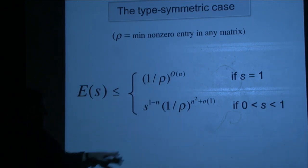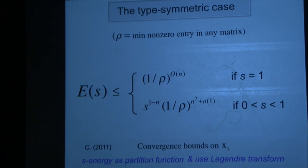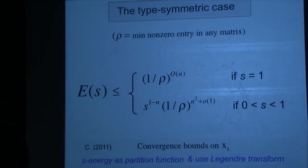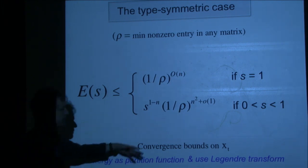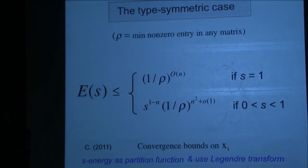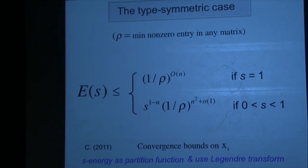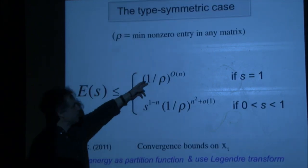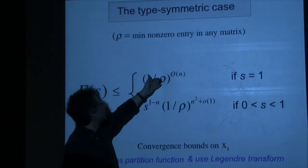These bounds are extremely useful because you can derive convergence from them directly. I did this using standard combinatorial arguments, but then I found that if you interpret the S-energy as a partition function, you can derive it using a Legendre transform argument — totally standard in physics. It's interesting to see how different arguments are actually the same with different terminology. These bounds are optimal for the row-n case.